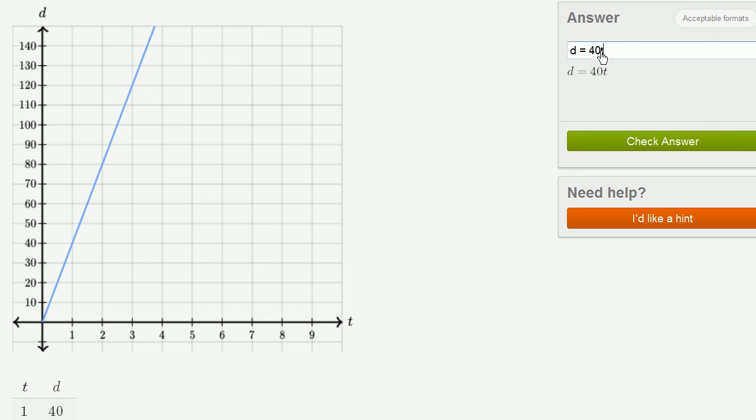The dollars paid is equal to 40 times the time in months. The time in months is the independent variable. It drives the dependent variable, the number of dollars you pay.